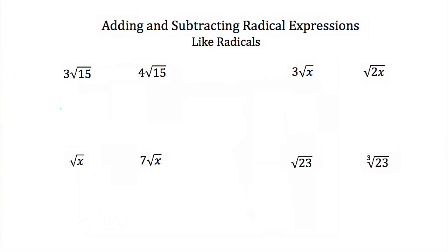The root sign is to the same power and what's underneath the root is the same. Here we have 3 square roots of 15 and 4 square roots of 15. These are both square roots and the radicand is 15 in both of them. So these are like radicals.